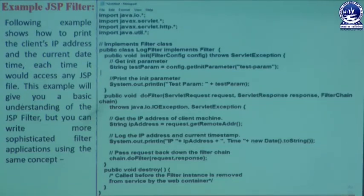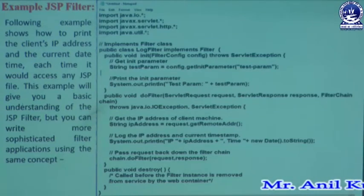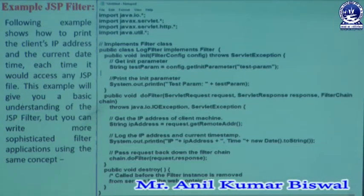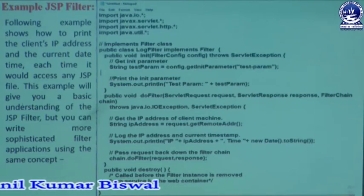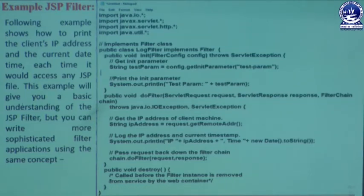The doFilter() method is declared as: public void doFilter(ServletRequest request, ServletResponse response, FilterChain chain) throws java.io.IOException, ServletException. It uses three parameters — request, response, and chain — and throws two exceptions: java.io.IOException and ServletException.